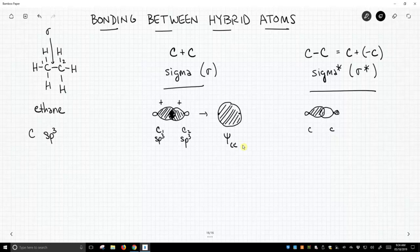Let's take a sigma star. So now we're going to do c1 minus c2. And so there's c1 and c2, and these are both sp3 hybrids.